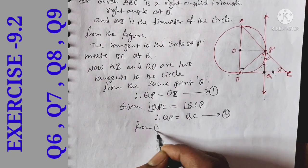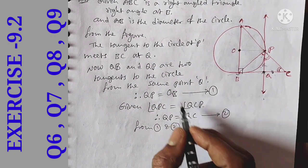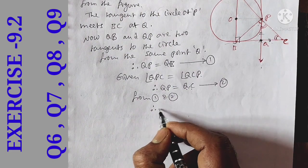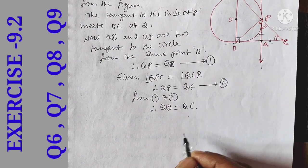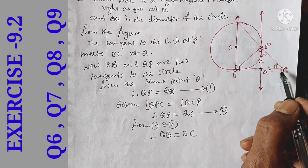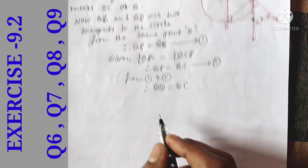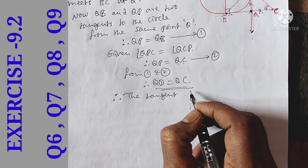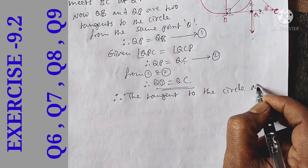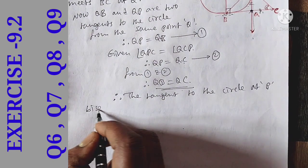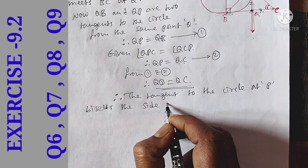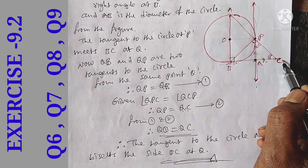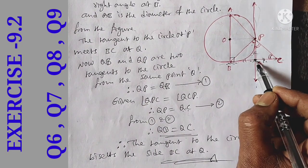From equations 1 and 2: QP = QB and QP = QC, so QB = QC. Therefore QB is equal to QC. It is proved. Therefore the tangent to the circle at P bisects the side BC at Q.